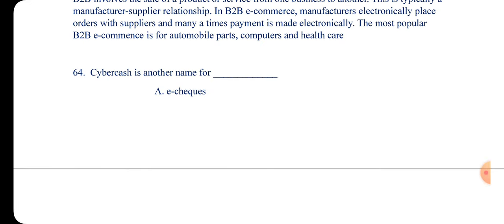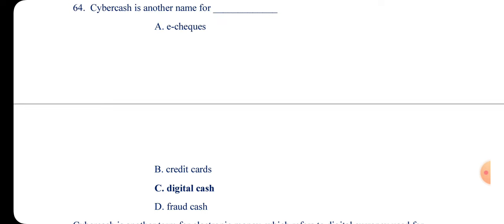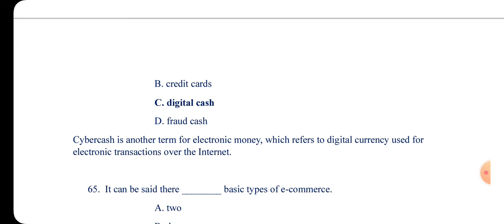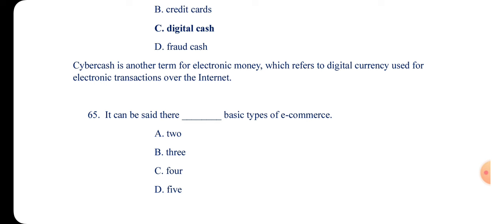Question 64: Cyber cash is another name for — e-checks, credit cards, digital cash, or fraud cards? The answer is digital cash. Cyber cash is another term for electronic money, referring to a digital currency used for electronic transactions over the internet.